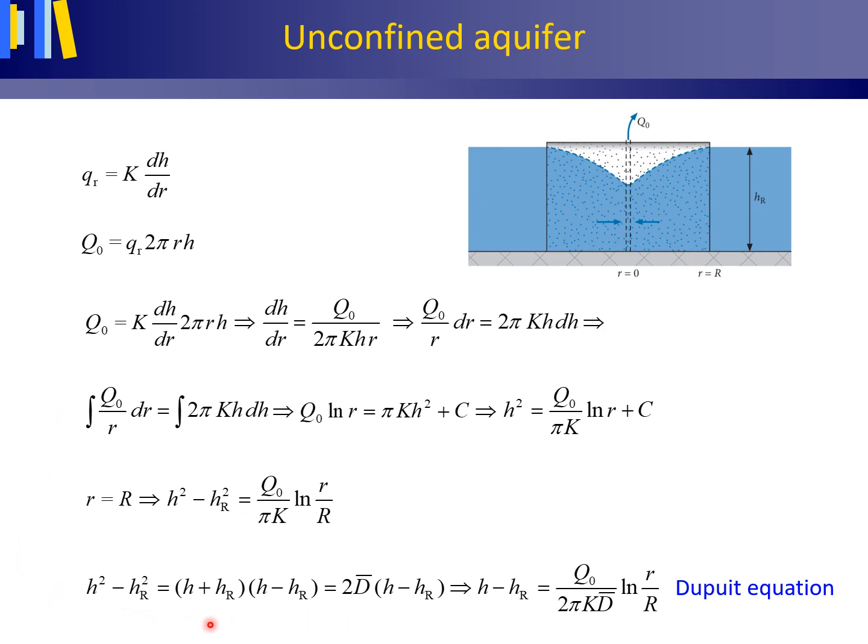And then for H plus HR, we can take two times the average saturated thickness or depth of the aquifer. We can then rewrite the equation in this shape, which we recognize as the Dupuit equation for a confined aquifer.